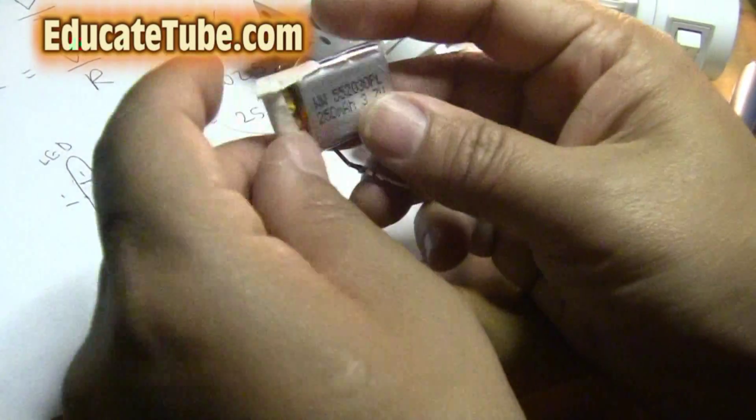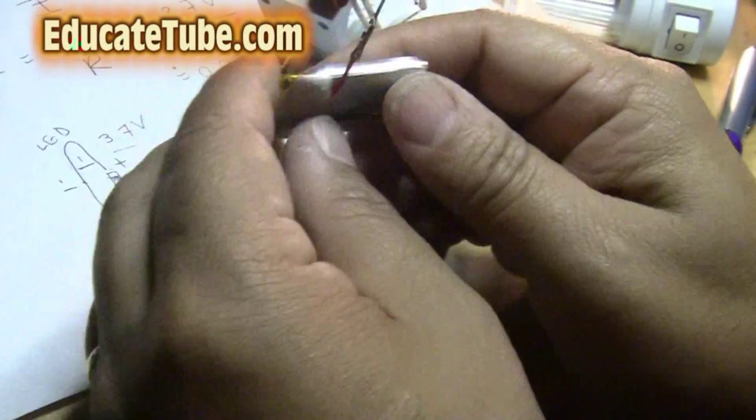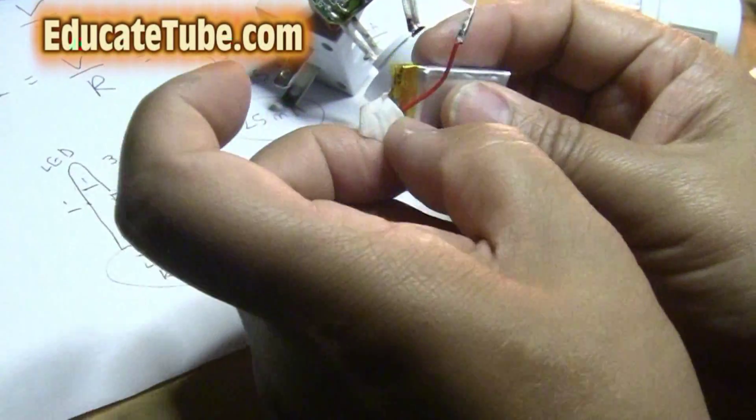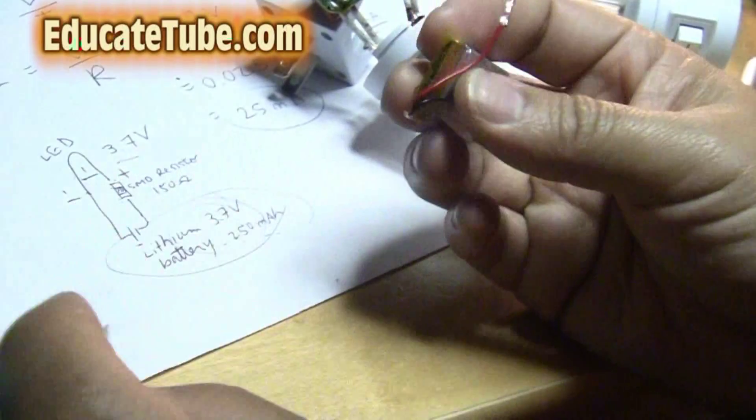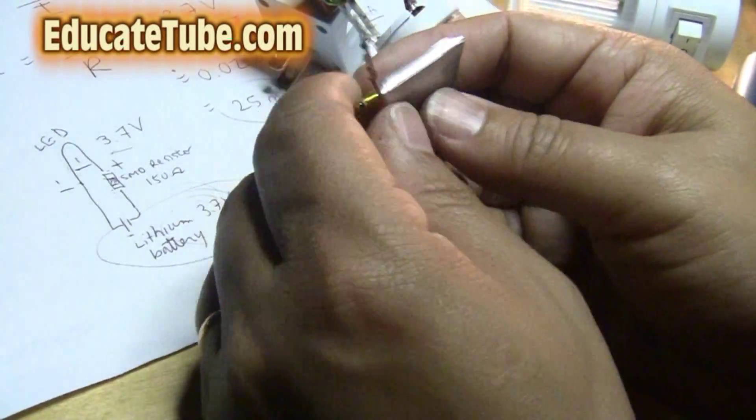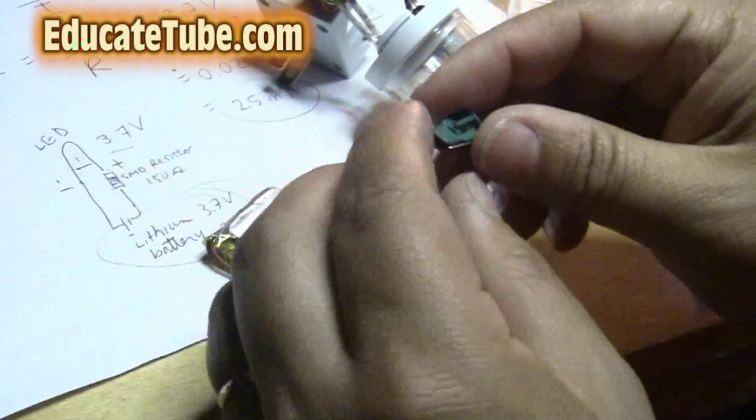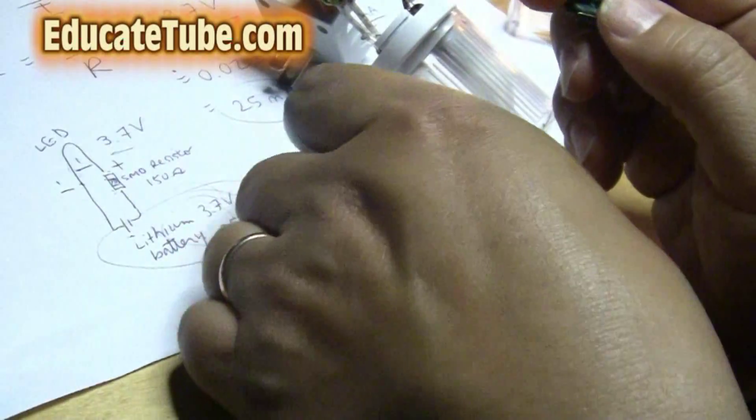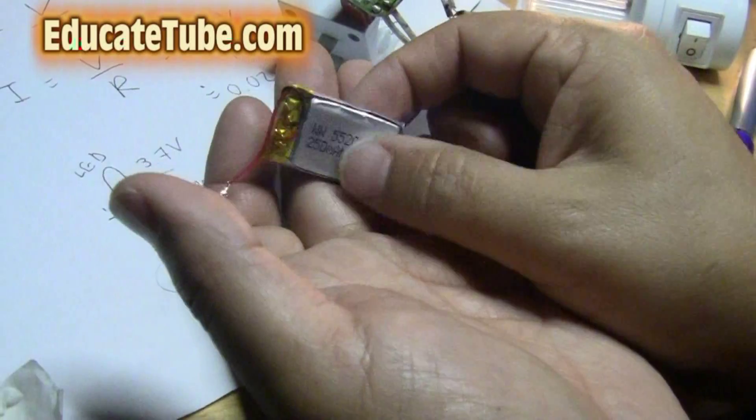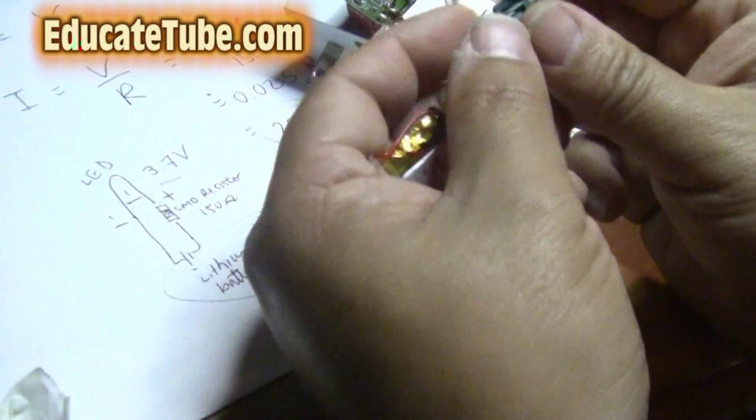So here we have a 3.7 volt, 250 milliamp hour battery. Very tiny. As you can see how small it is. It's actually used in smart watches and used to be, if you check your iPod Nano, I believe it actually uses this size of lithium batteries. So what can I do with this? So if you ever just able to salvage this type of battery, remember these are rechargeable battery. You can recharge it. I'll show you later how to recharge these type of battery. Even using solar panel to recharge this.